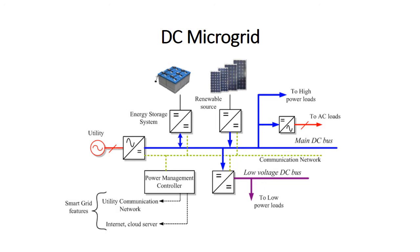For low-power loads, we step down the DC voltage to a lower DC value as shown in the diagram. If we have AC loads, we convert electricity from DC into AC as shown in the diagram. The communication network connects all converters and the power management controller.